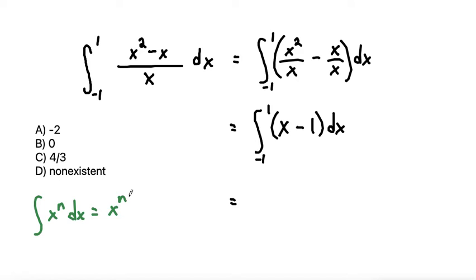We add one to our power, divide by the new power, and then a plus c for our indefinite integral. So using this rule, our x to the power with nothing written is an invisible one. So we'll add one to the power to make it 2, divide by the new exponent which is 2.